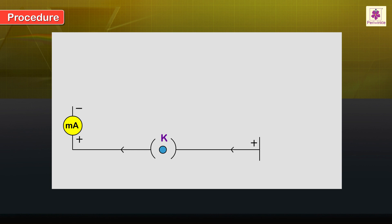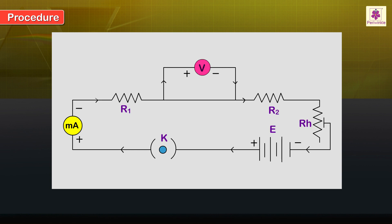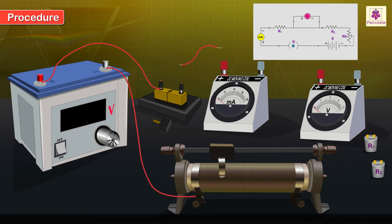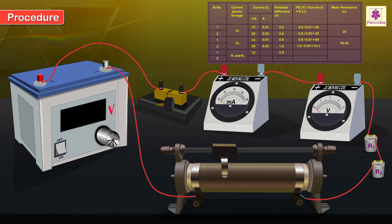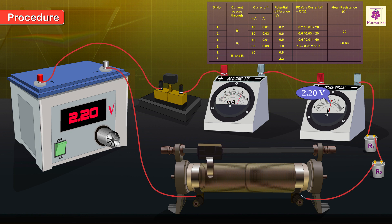Procedure: Draw a circuit diagram showing R1 and R2 in series along with the other devices, except the voltmeter which is connected across both R1 and R2. Connect all the devices according to the circuit diagram and switch on the current. Proceed as before to obtain two different sets of readings and record them. Then switch off the current.